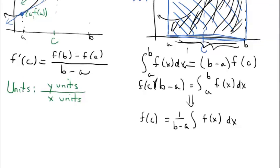Let's make sure this formula, which looks kind of scary, actually works. F of C is the height of the rectangle. Over here, 1 over b minus a — well, b minus a is the base of our rectangle. The whole integral can be replaced with area. If I rearrange and stack the fraction, the area of a rectangle divided by its base equals its height. We get the area through the value of the integral, divide by the base, which results in the height.